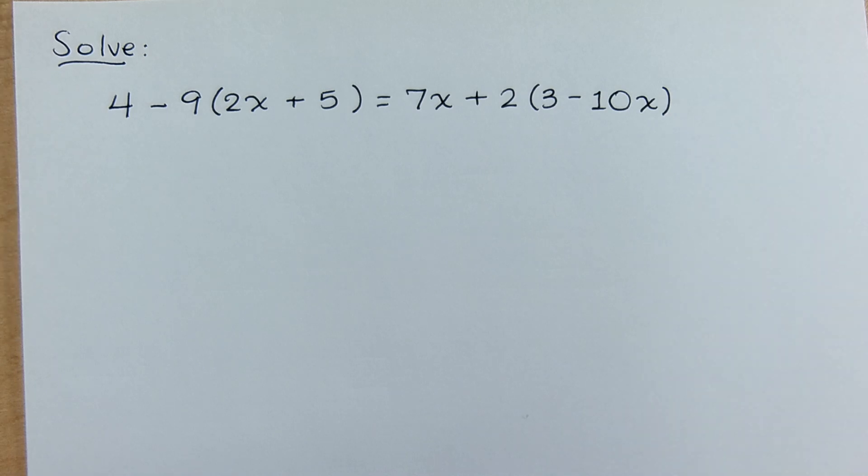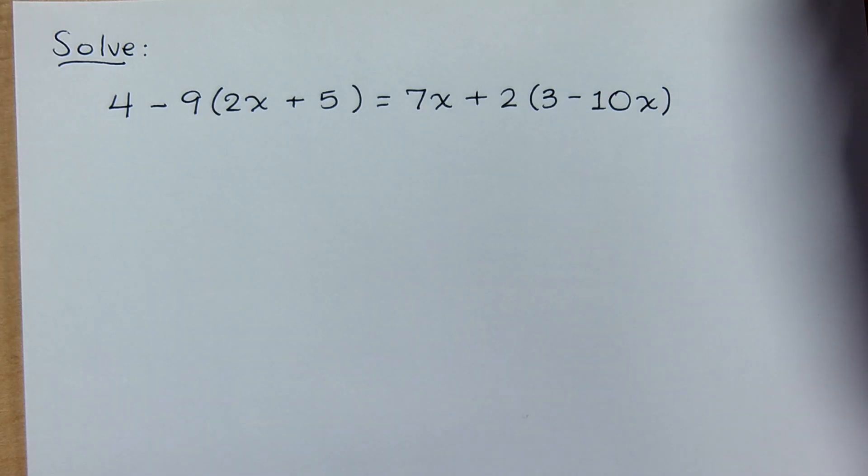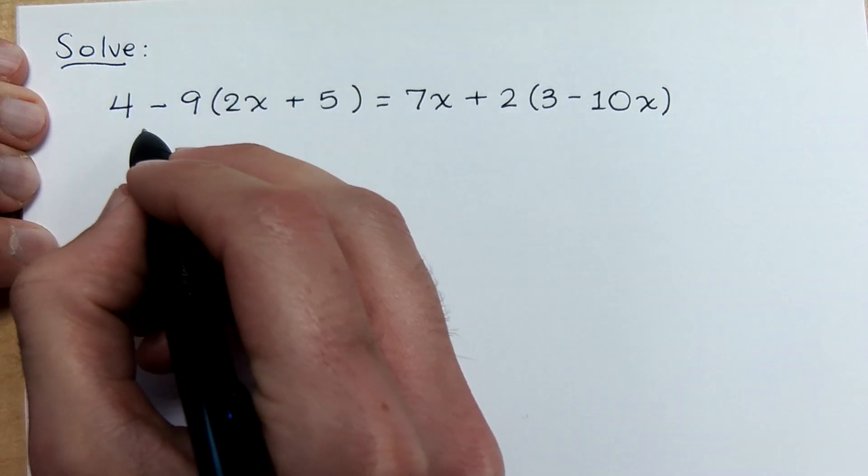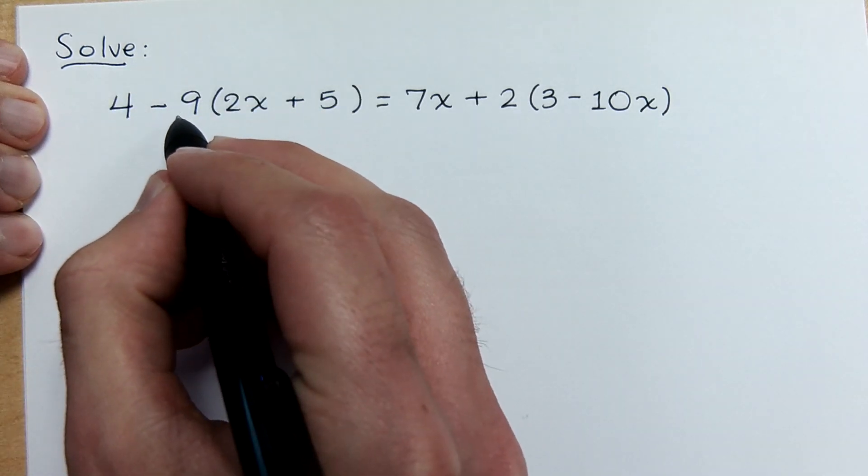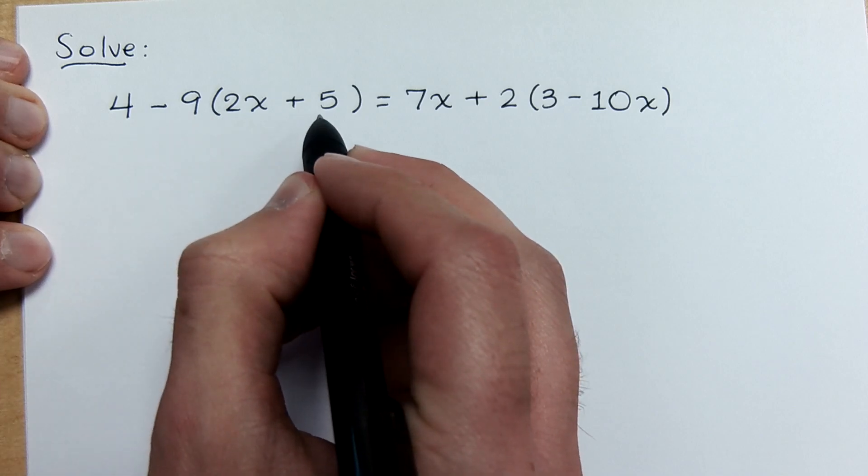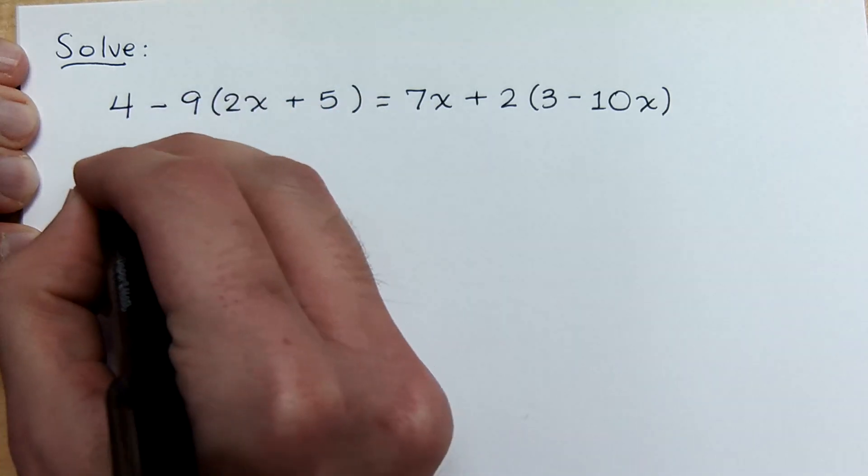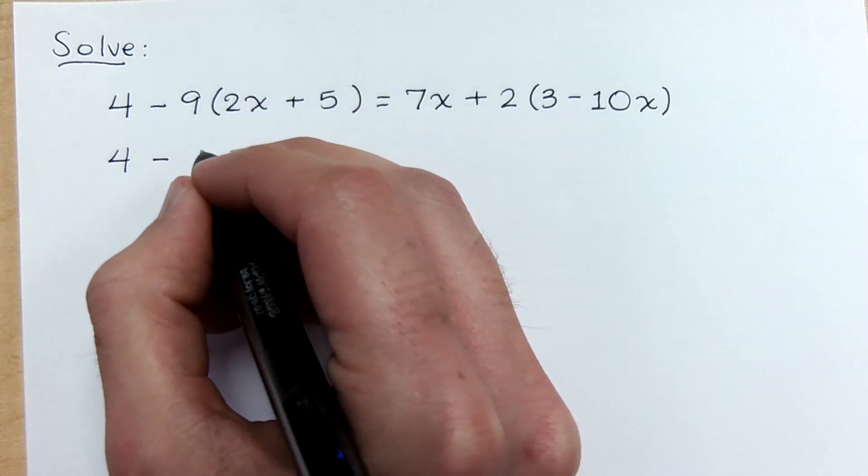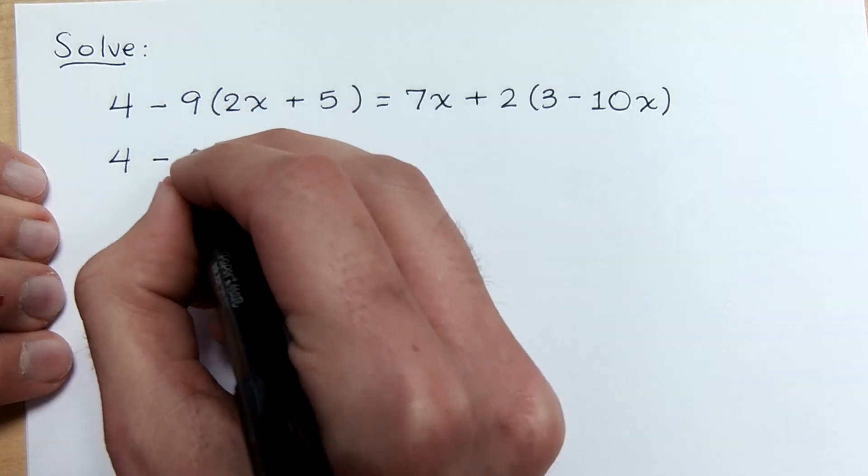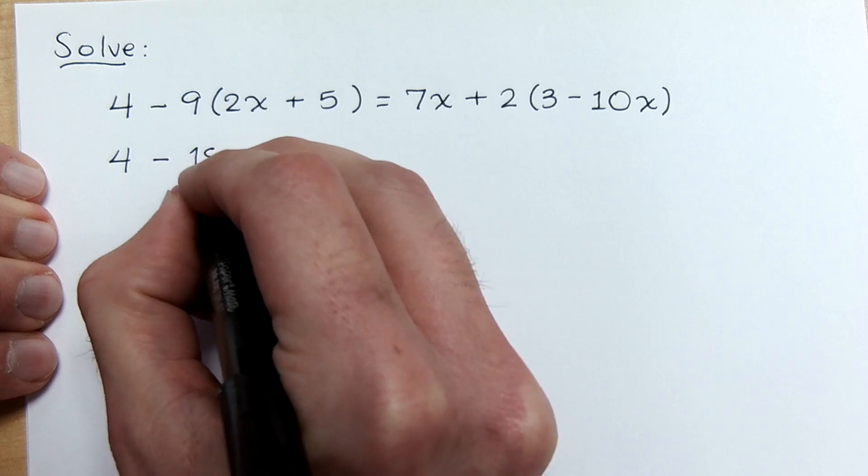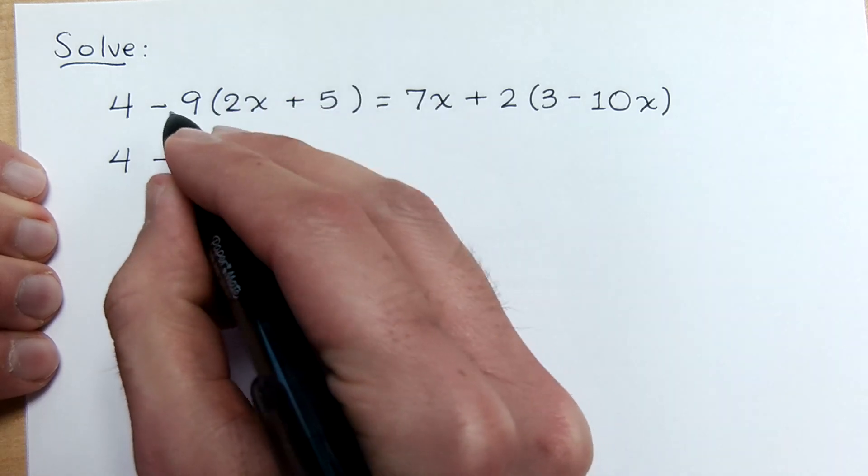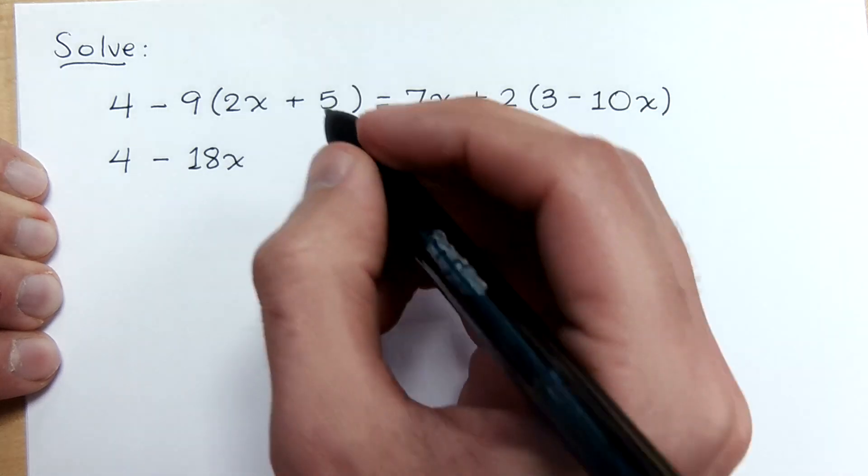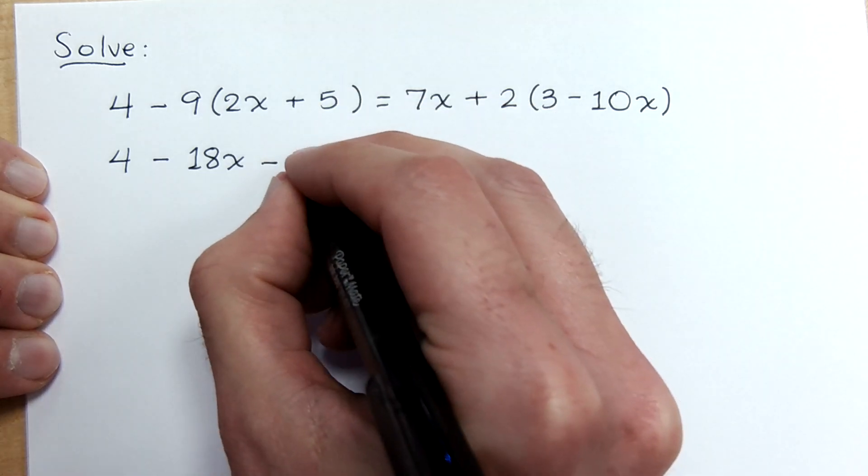So we're going to take each of these guys that we have and just distribute. Please make sure that you do not do 4 minus 9. The 9 is connected to this group and that group only. So that's 4 minus, whenever you're ready. That's good. That's 18x and then minus 9 times 5. That's right, good job. Negative 45.